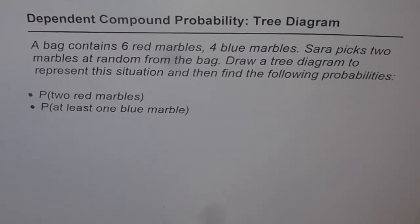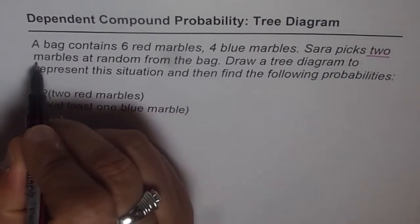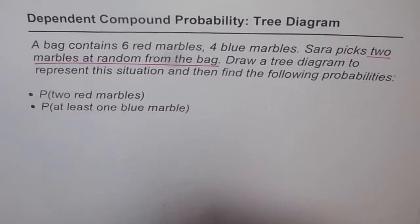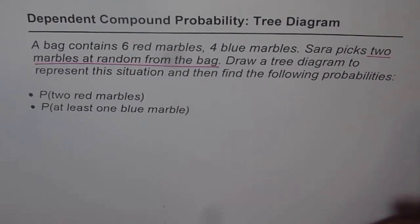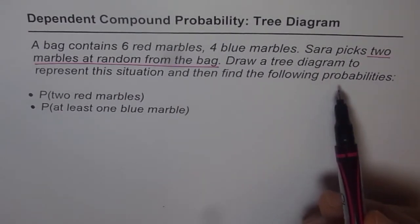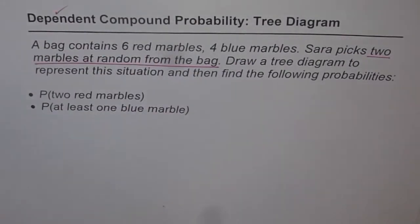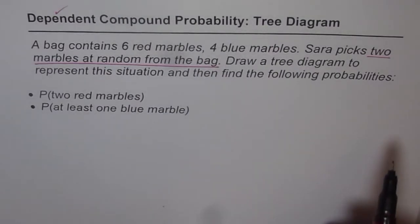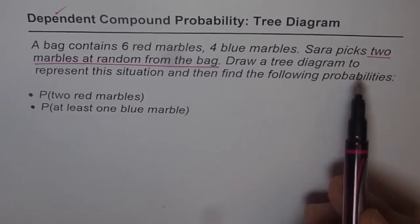The question looks similar to the previous one, but there is a huge difference. That difference is because Sarah picks 2 marbles. When she picks 2 marbles, there is no question of replacing the first one. Since the first one is not replaced, it is a case of dependent probability. It is also a compound probability since 2 marbles are picked, not just 1.